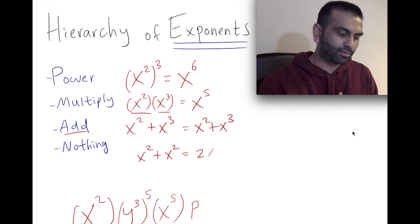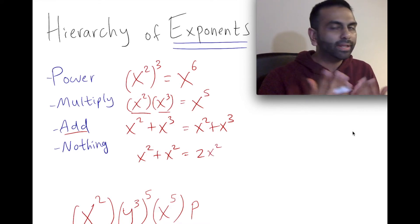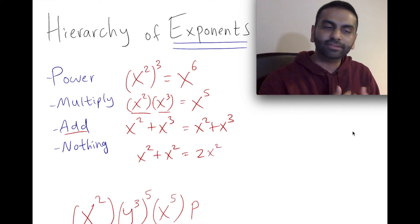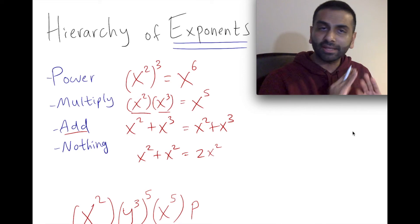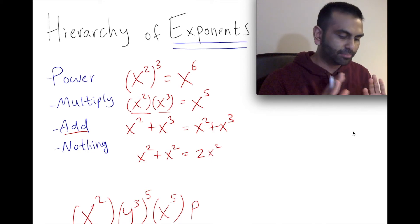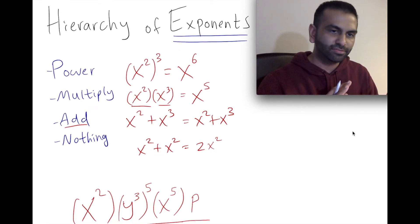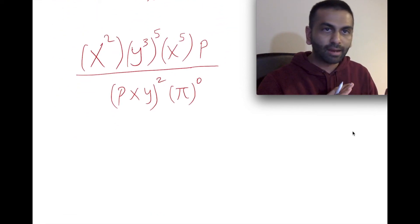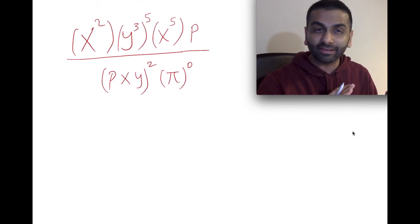This rule is just an easy way to remember what to do to the exponent given the operation. Now I'm going to do one complicated-looking example problem that combines a lot of these things.